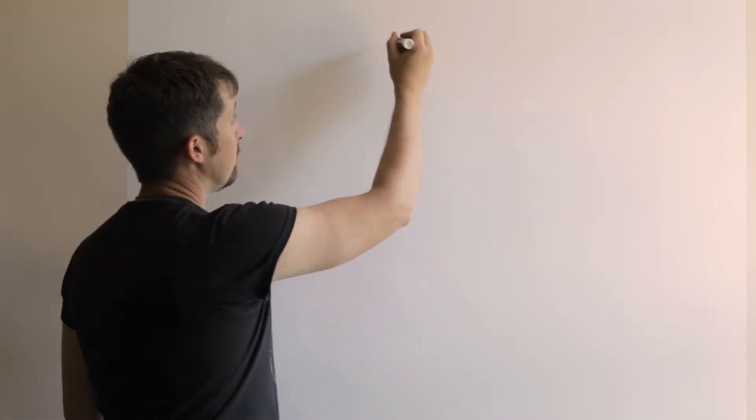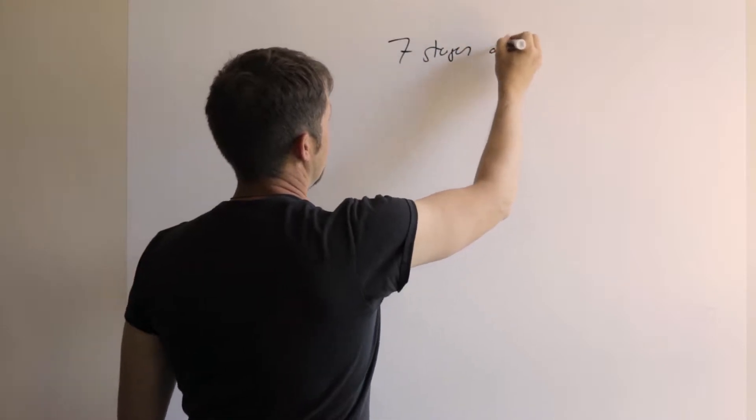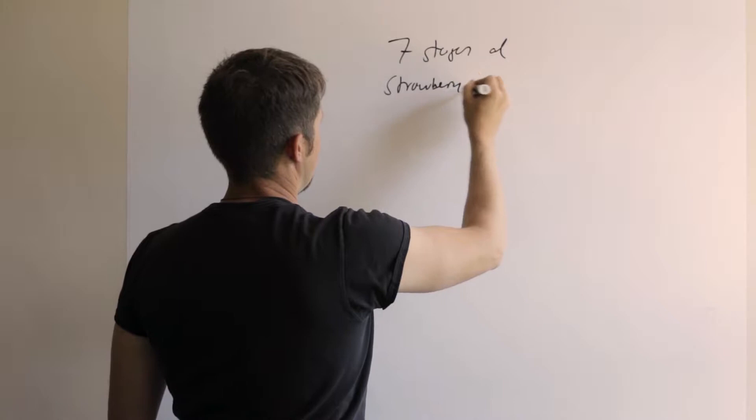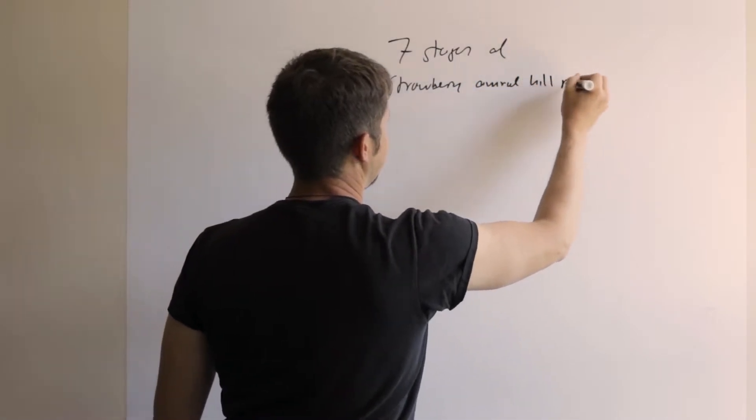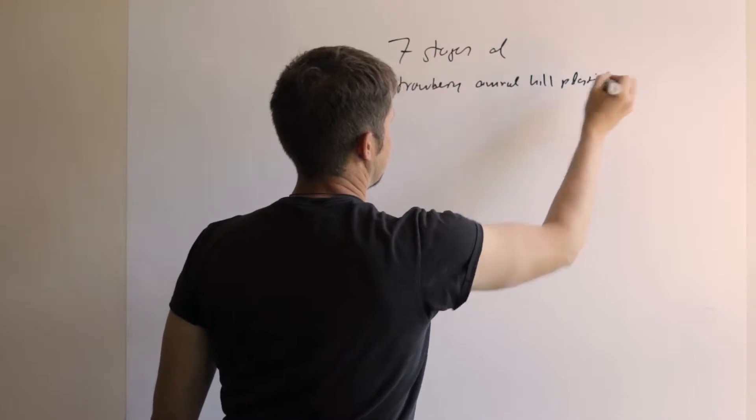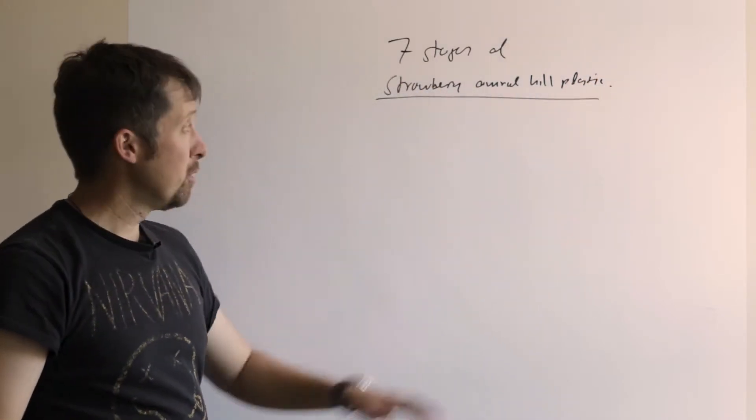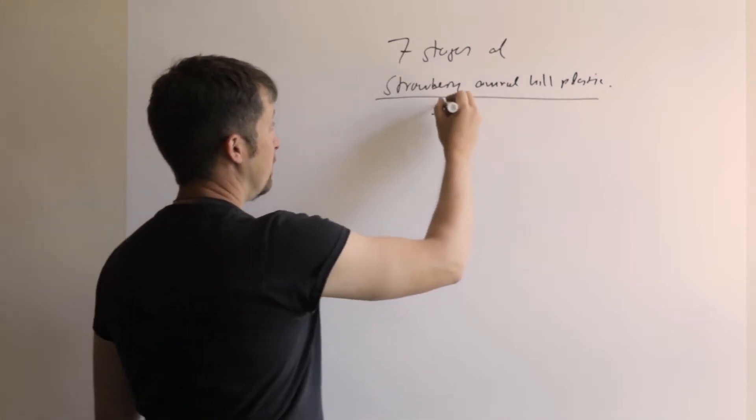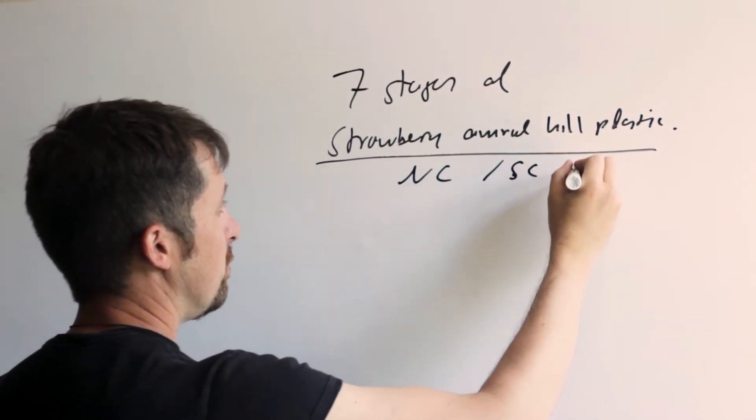I want to talk today about the seven stages of Strawberry Annual Hill Plastic Culture, and please keep in mind that what I am showing here is very specific for North Carolina and maybe for South Carolina and for a spring production system.